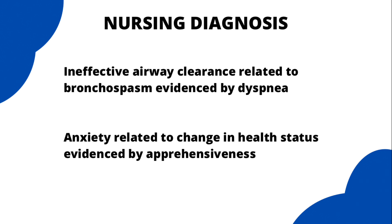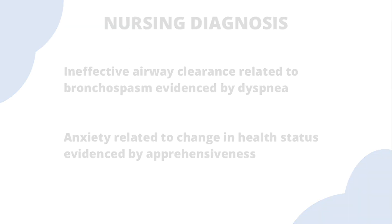The second diagnosis — anxiety related to change in health status evidenced by apprehensiveness — implies that the patient is very anxious because of everything going on. The person may not want to talk to anybody, may not cooperate, or may be very scared and display emotional disturbance. There are many other nursing diagnoses for bronchial asthma, but for today's tutorial I'm focusing on just these two.